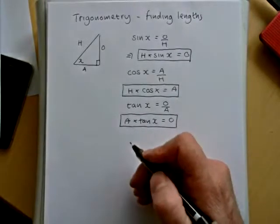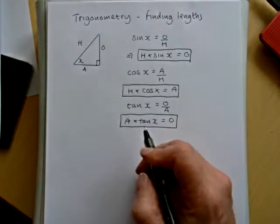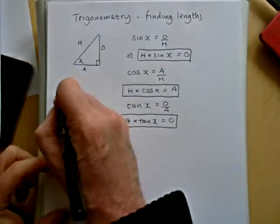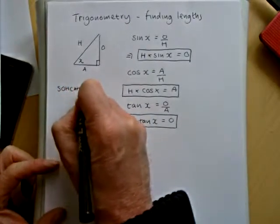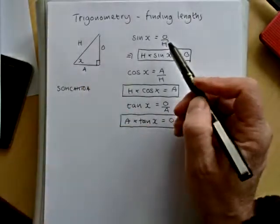So I'm now going to show you how we can use trigonometry to find missing lengths in triangles, where we're given a side and an angle. Now, if you've seen the video on finding missing angles, then you'll know the three ratios SOH CAH TOA, and you'll know we use SOH CAH TOA to try and remember them.